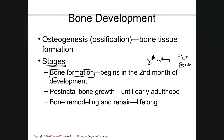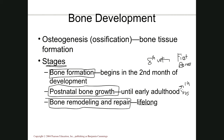As soon as the first bone cells appear, we change the name from embryo to fetus — that's the distinction between the two. Then we get postnatal bone growth after birth, continuing until you reach adult height: about age 18-19 for females and age 25 for males. After that, bones stop getting longer but continue remodeling and potentially repairing throughout life.